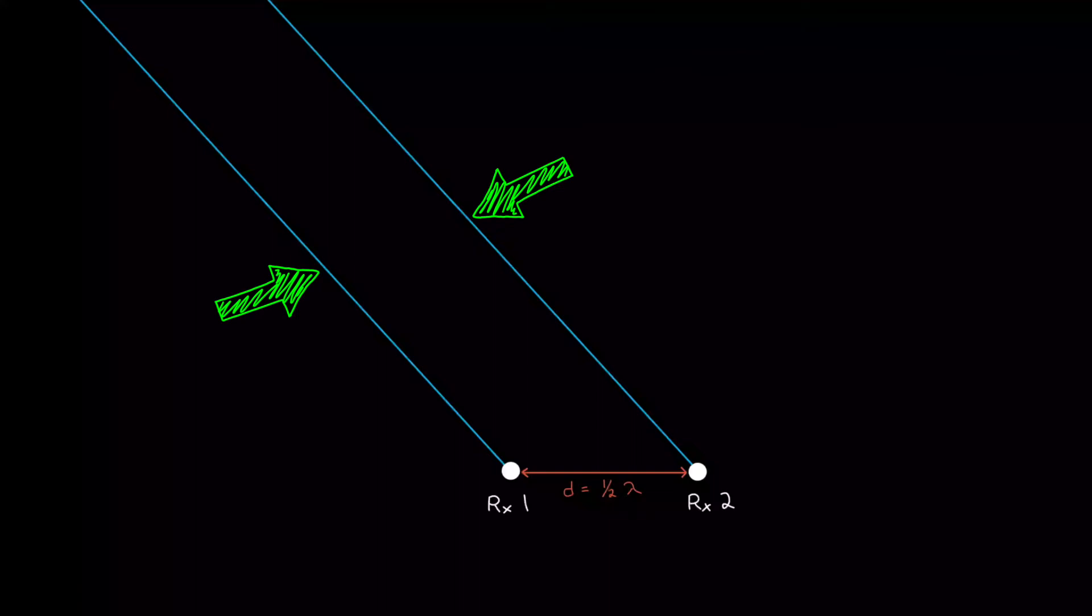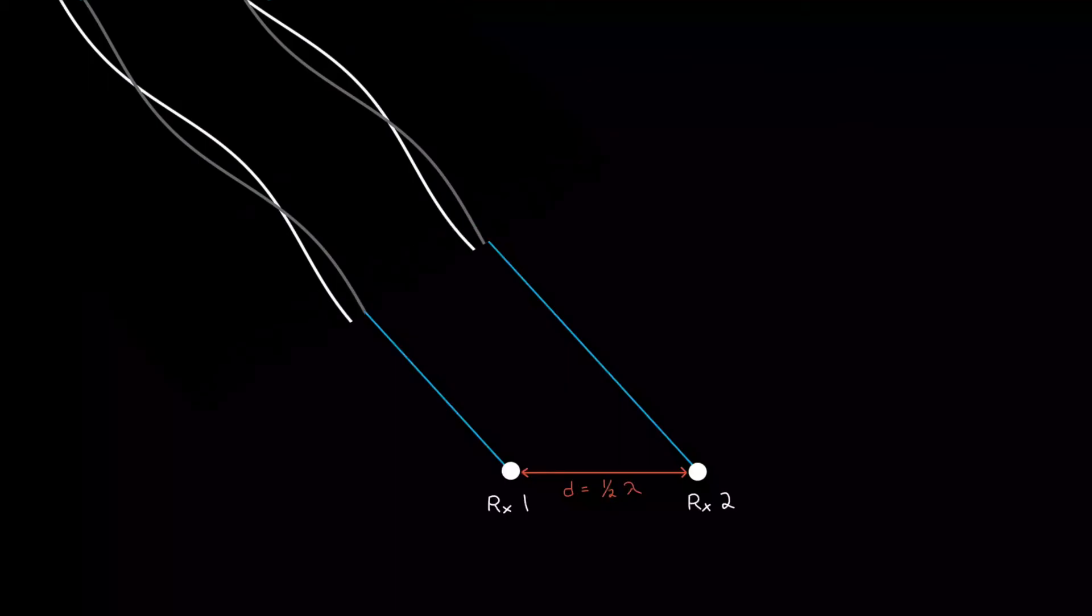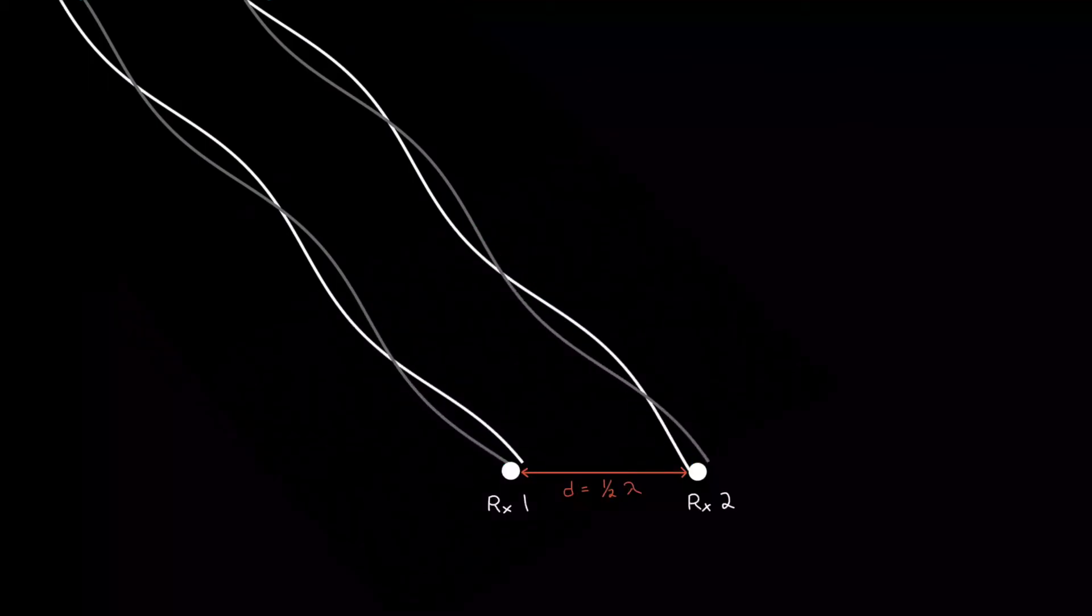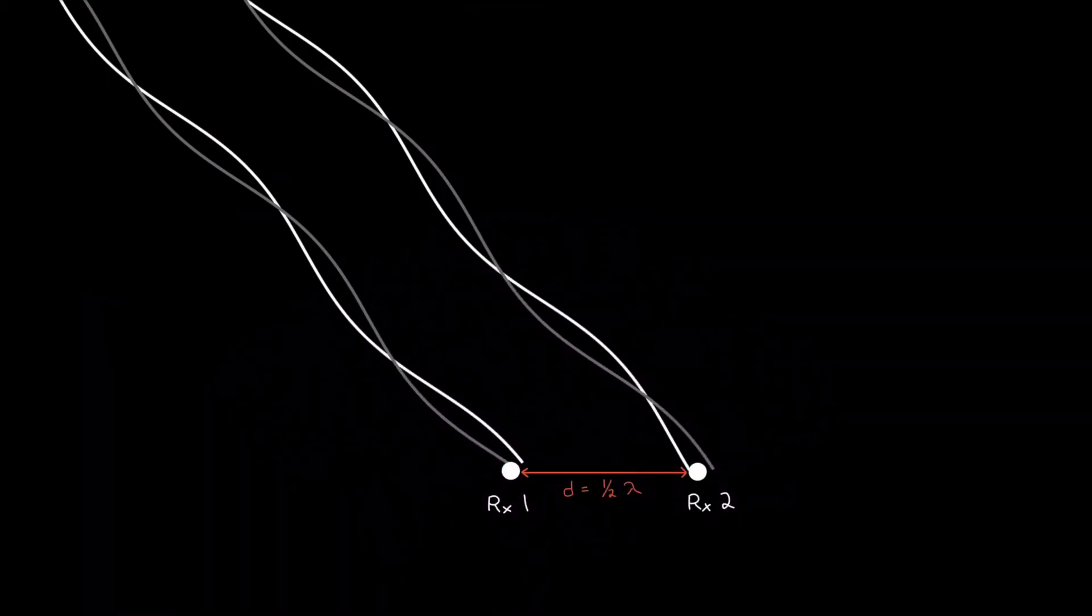So basically, the reflected signal is arriving at both antennas from the same direction. Alright, so what does this do for us? Well, let's think about the reflected signal, which consists of two orthogonal sinusoids that are 90 degrees out of phase. The so-called IQ signals that we talked about in the last video.